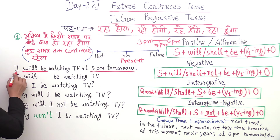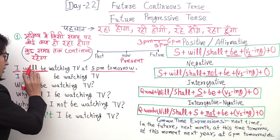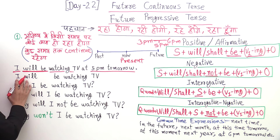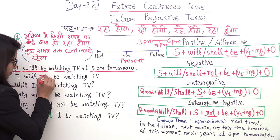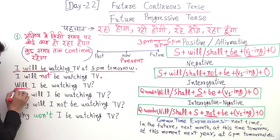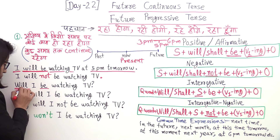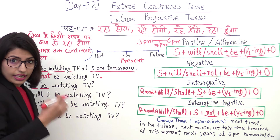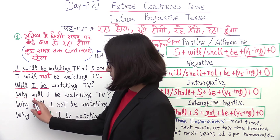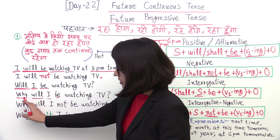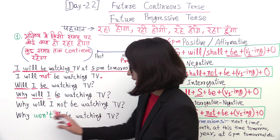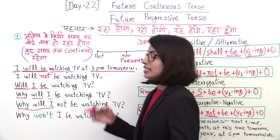Now let's understand from the structure using our example. Subject 'I' + will be watching TV at 5 pm tomorrow. You can also say: I shall be watching TV at 5 pm tomorrow. For negative: I will not be watching TV at 5 pm tomorrow. For interrogative: Will I be watching TV? And for interrogative negative: Will I not be watching TV? Or with a question word: Why will I be watching TV? Why will I not be watching TV?